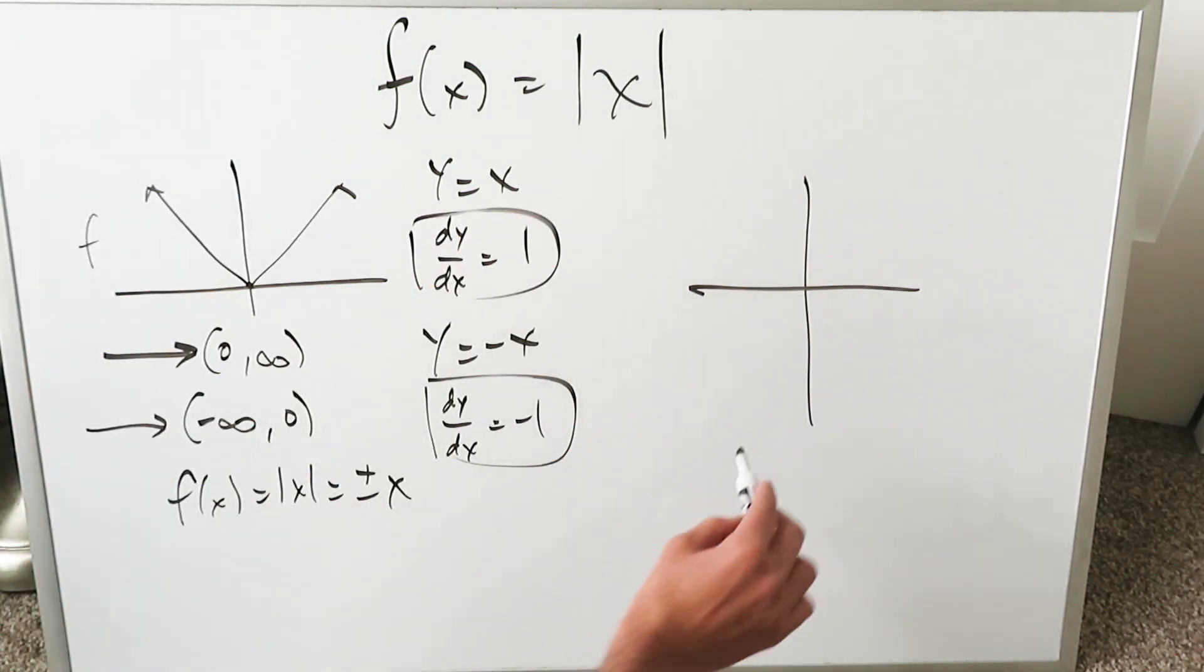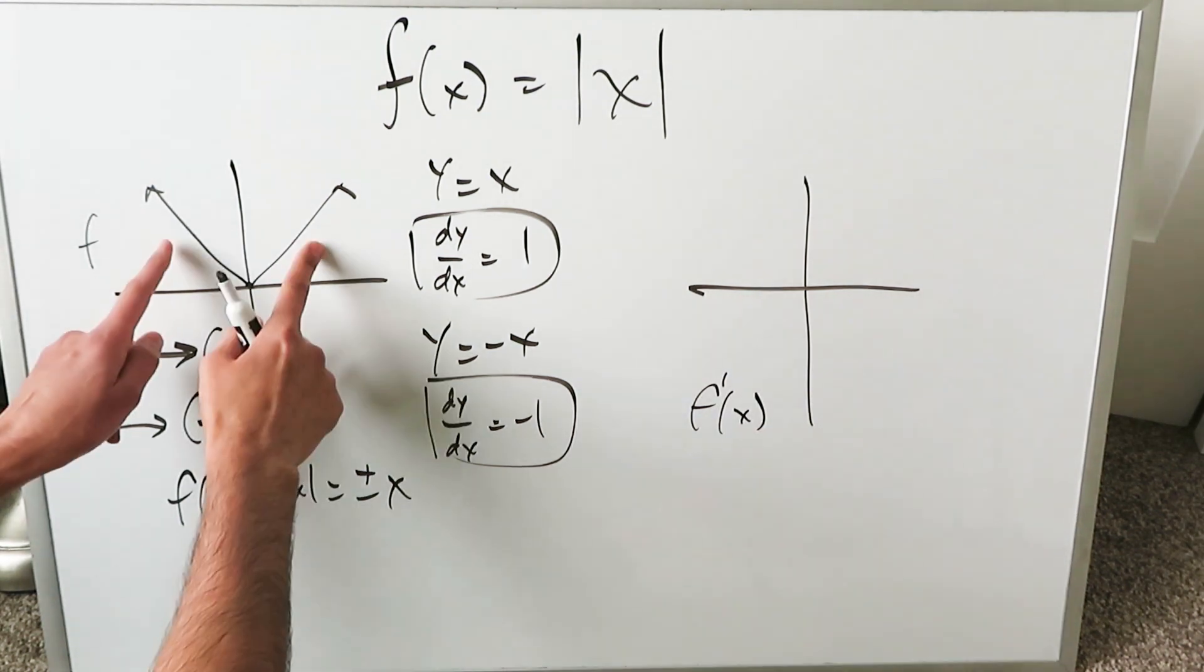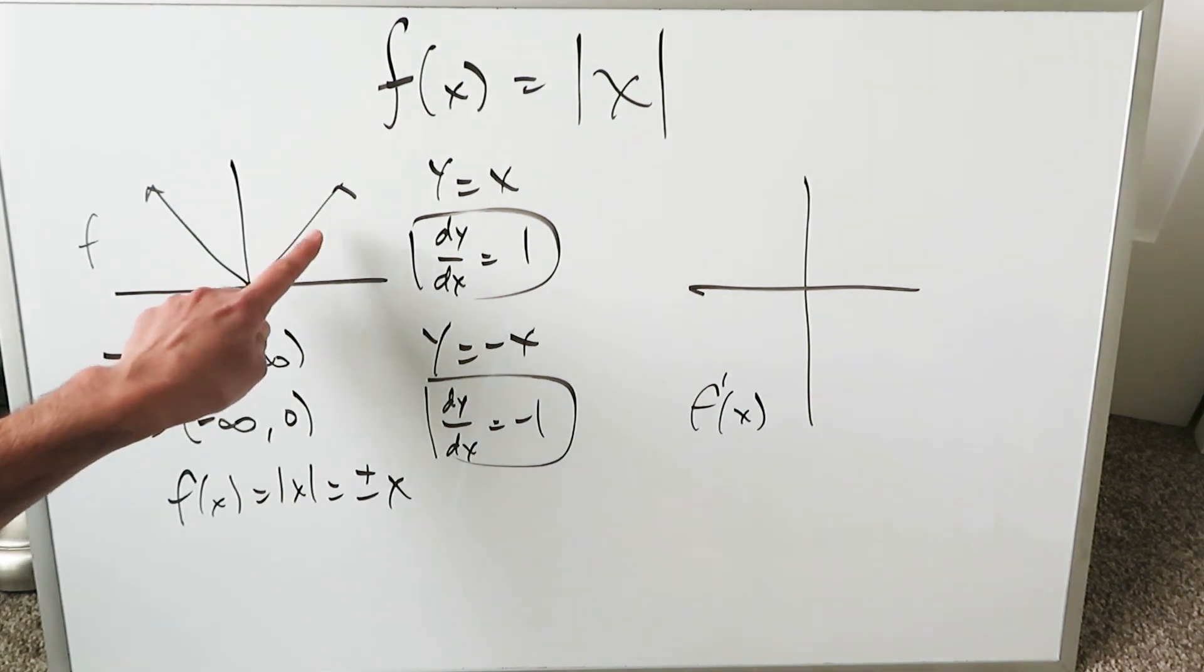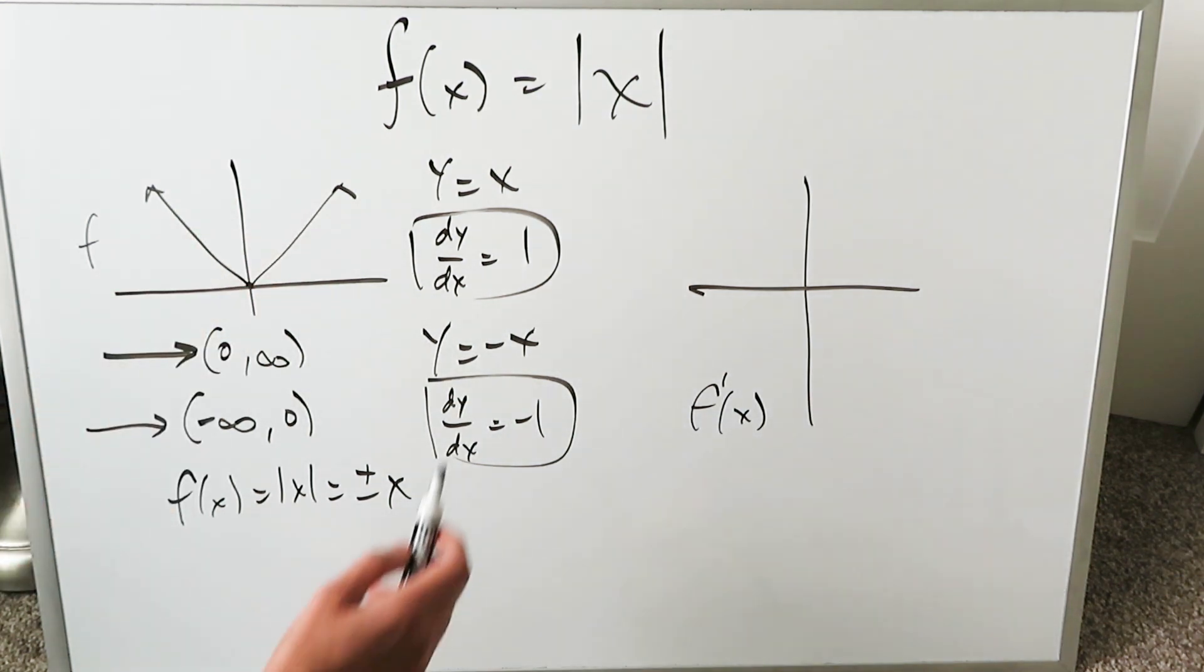Here we have the graph of the function. Here we will do the graph of the derivative of that function. Visually looking at it, the slope here is a positive 1, slope here is a minus 1, and likewise the tangent lines will have similar slopes.